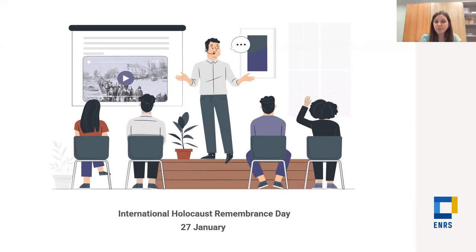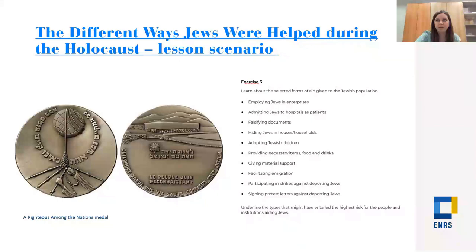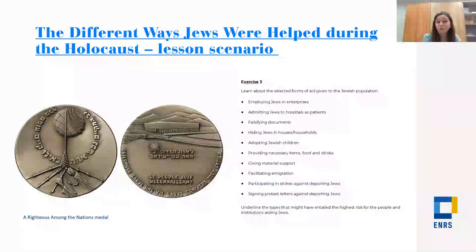The four scenarios are currently only in English, though translations are planned. Some parts can be easily translated or you can use the infographic and graphic elements. The first scenario is called The Different Ways Jews Were Helped During the Holocaust — Julia will speak about it more shortly. In this scenario, students learn what help might mean, look at the medal, and reflect on the phrase 'whoever saves one life, saves the world entire,' and what stories of helping Jews tell us about human nature.